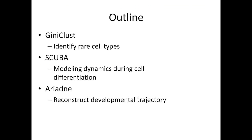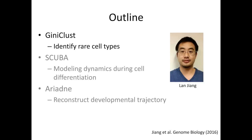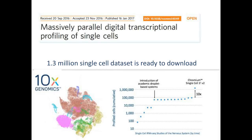What I'm going to tell you today is about our work in the past few years to develop several computational methods to analyze single-cell data and characterize cell types, dynamics, and lineages. The first method is called Gini Clust. The goal is to identify rare cell types. This work was led by a very talented postdoc called Lan Jiang. We were motivated by the rapid growth in scale of single-cell analysis — the number of cells profiled by single-cell technology has grown almost exponentially over the past few years.